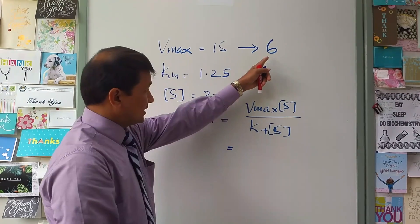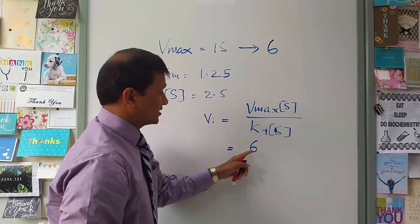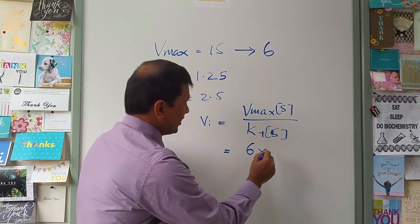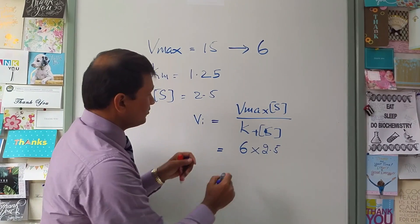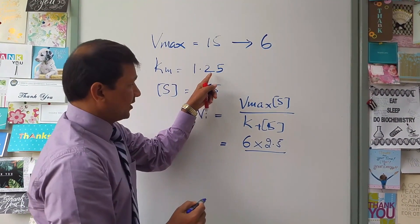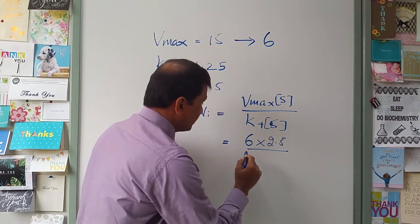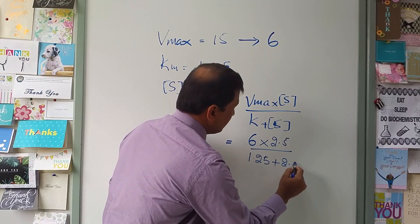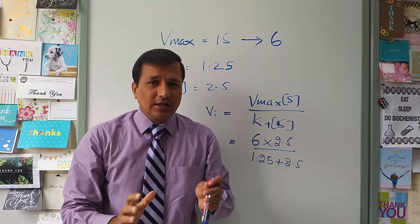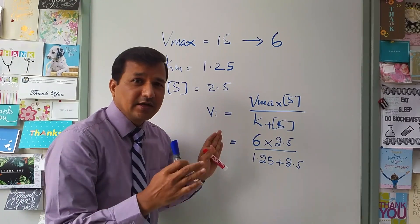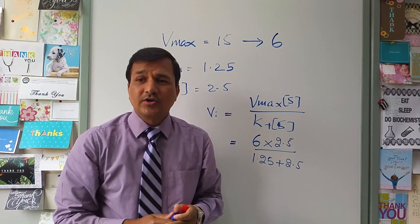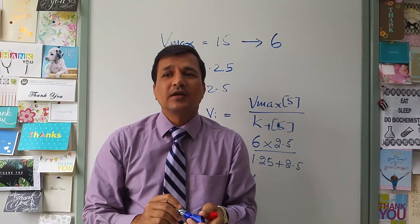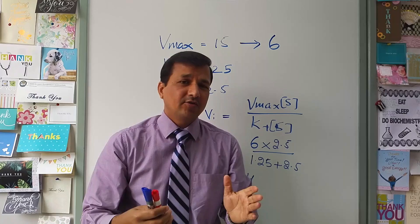Substituting the values: the new Vmax is 6 in the presence of 5 millimolar inhibitor, substrate concentration is 2.5, and Km is 1.25 (unchanged for non-competitive inhibition). So: V = 6 × 2.5 / (1.25 + 2.5). Simplifying this gives 4 units per minute per milligram of protein.